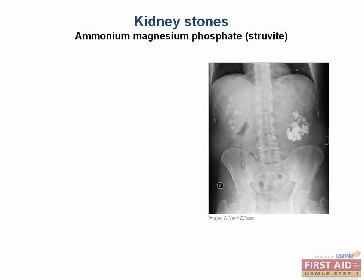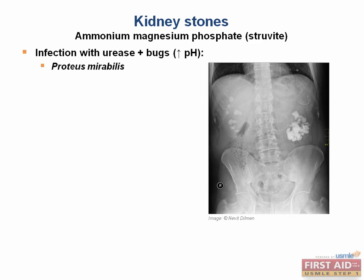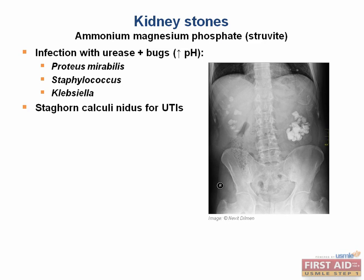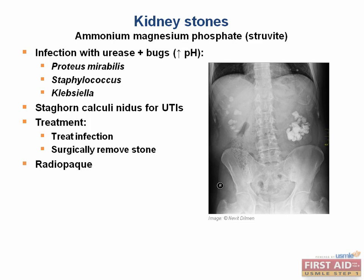The next type is the ammonium magnesium phosphate stone, also known as the struvite stone. These occur when urine pH is abnormally high, like during infections with urease-positive bacteria, which break down urea to produce ammonia. The usual culprits are Proteus mirabilis, Staphylococcus, and Klebsiella. The staghorn calculi can be massive and become a nidus for UTIs. Treatments include antibiotics for the infection and surgical removal. They are radio-opaque and the stones kind of look like the top of a coffin lid — you can remember their association with ammonium magnesium by tracing a capital M in the coffin lid.